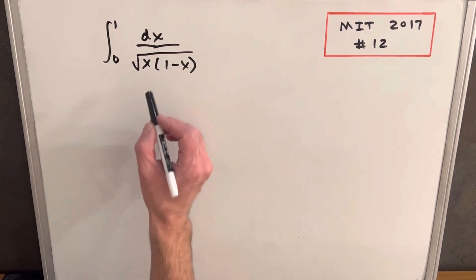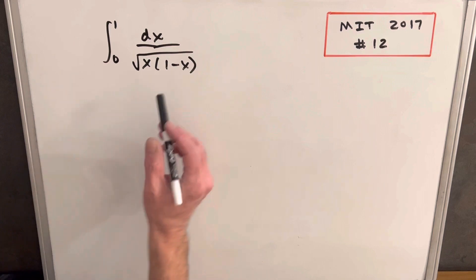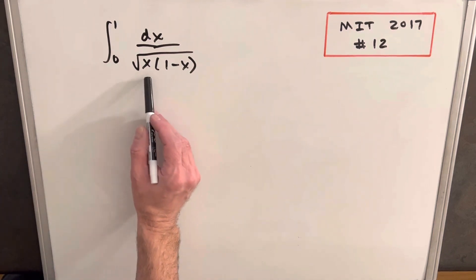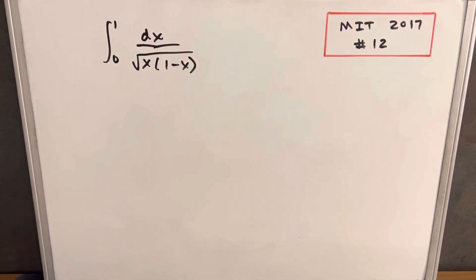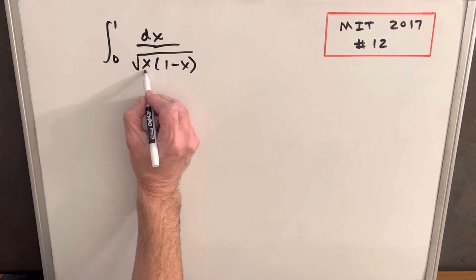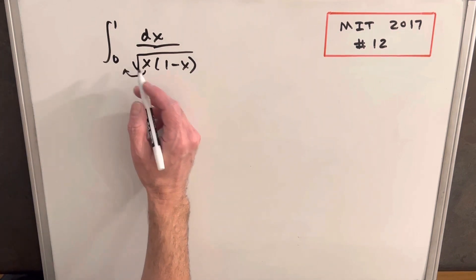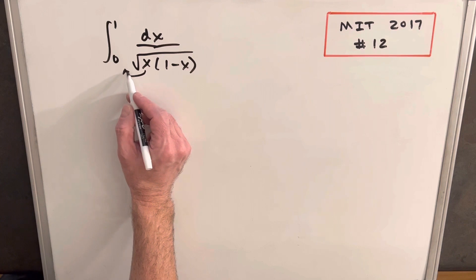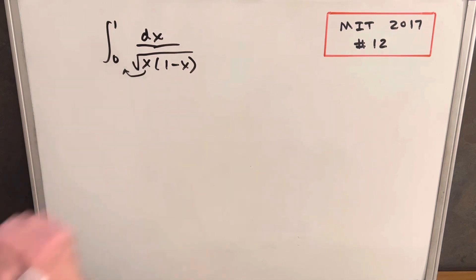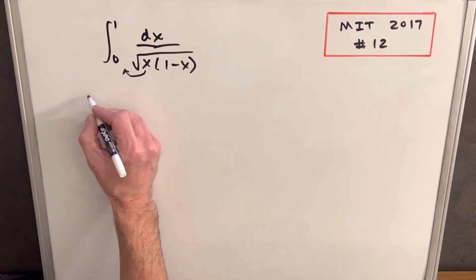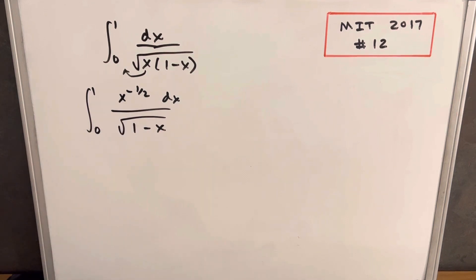Oftentimes when MIT breaks it out this way, they're usually misleading us, but I think in this case they're actually helping us. So what I'm going to do is factor out this x. When we factor it, it'll be x to the 1/2, but I'll bring it to the numerator as x to the minus 1/2. So rewriting this, we have our x in the numerator.